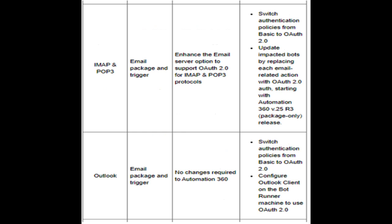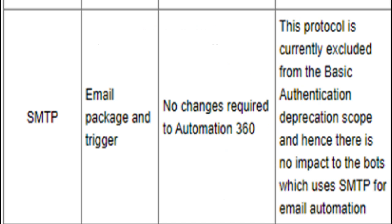Outlook — Email Package and Trigger: No changes required to Automation 360. Switch authentication policies from basic to OAuth 2.0. Configure the Outlook client on the bot runner machine to use OAuth 2.0. SMTP — Email Package and Trigger: No changes required to Automation 360. This protocol is currently excluded from the basic authentication deprecation scope and hence there is no impact to bots which use SMTP for email automation.